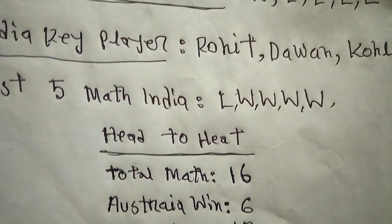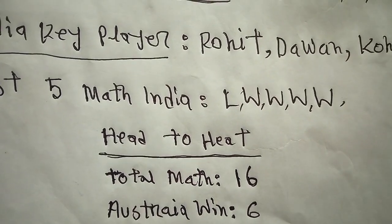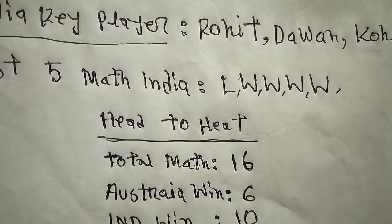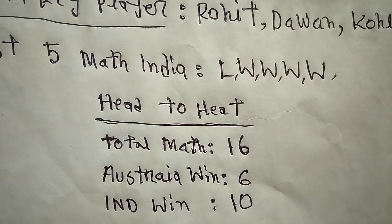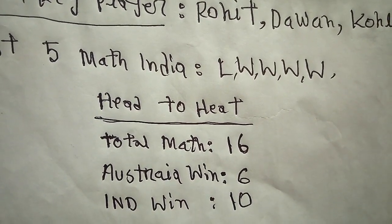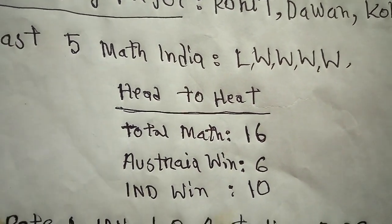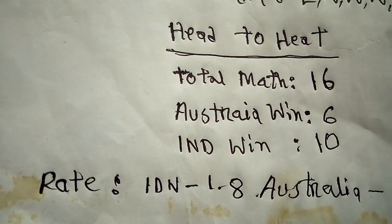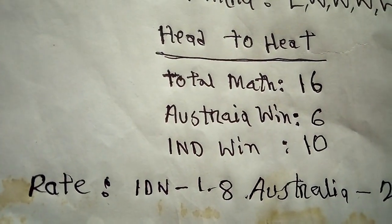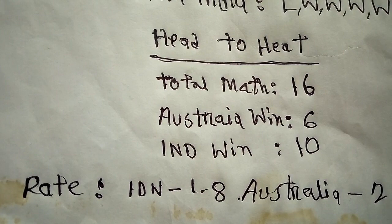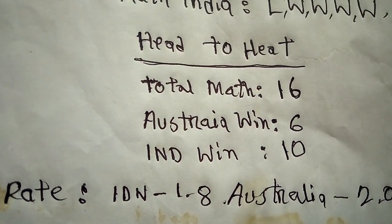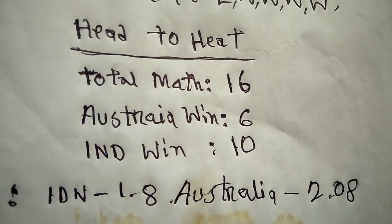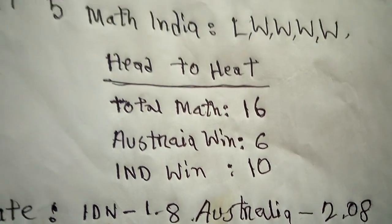Head to head: out of 16 total matches played between India and Australia, Australia have won six and India have won ten. In betting odds on Bet365, India are priced at 1.8 and Australia at 2.08.